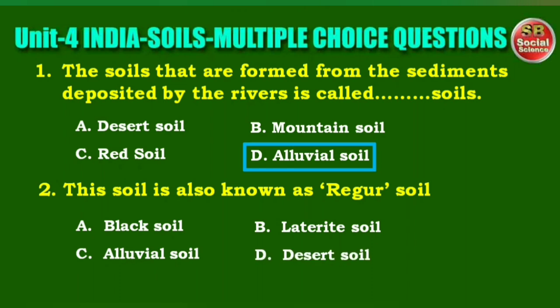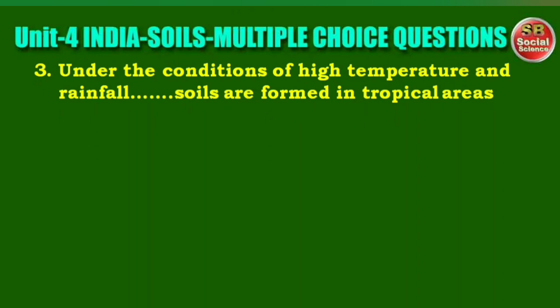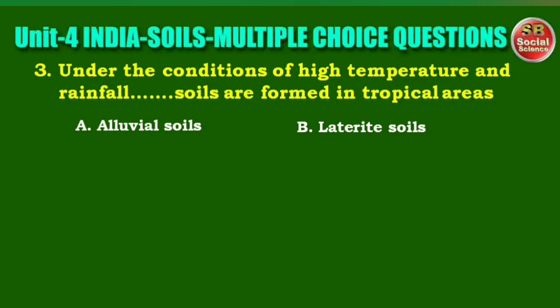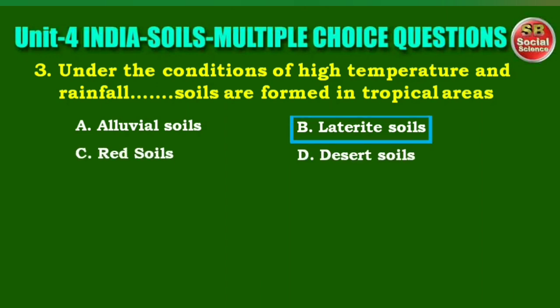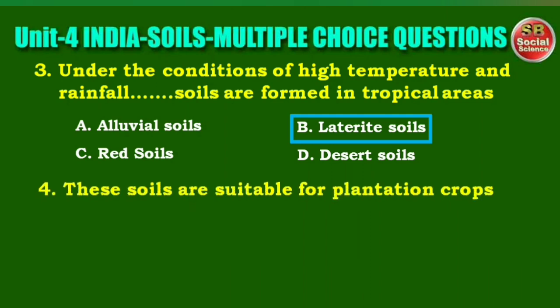Next question: this soil is also known as regur soil. Options are: black soil, laterite soil, alluvial soil, desert soil. The right answer is option A, black soil. Next question: under the conditions of high temperature and rainfall, blank soils are formed in tropical areas. Options are: alluvial soils, laterite soils, red soils, desert soils. The right answer is option B, laterite soils.